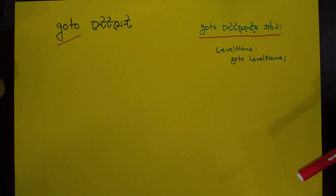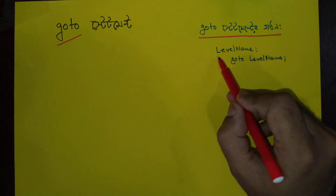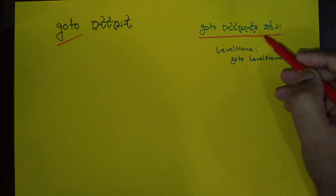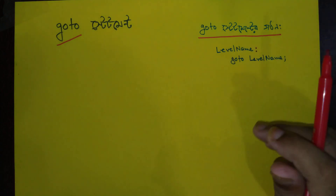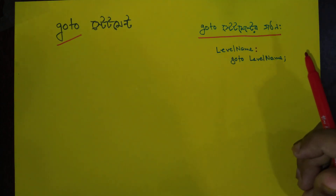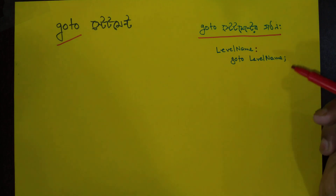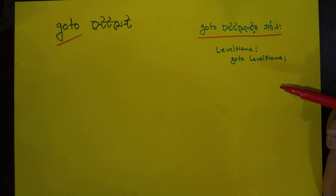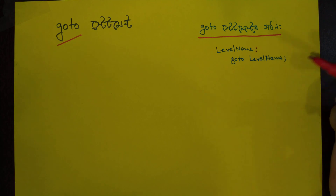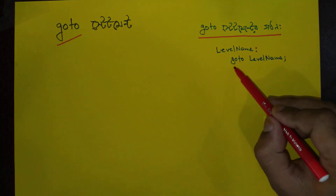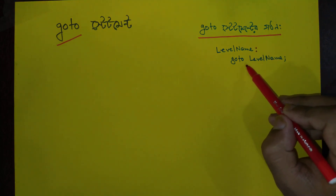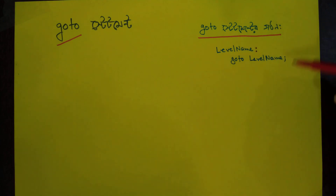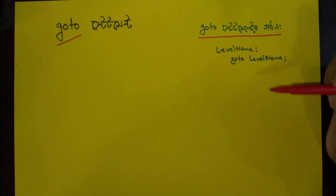We are going to check the format and we have to check the level name. If you need to check the level name, you can name the variable. We will check the keyword that is the level name. This is the declaration that we have done before.